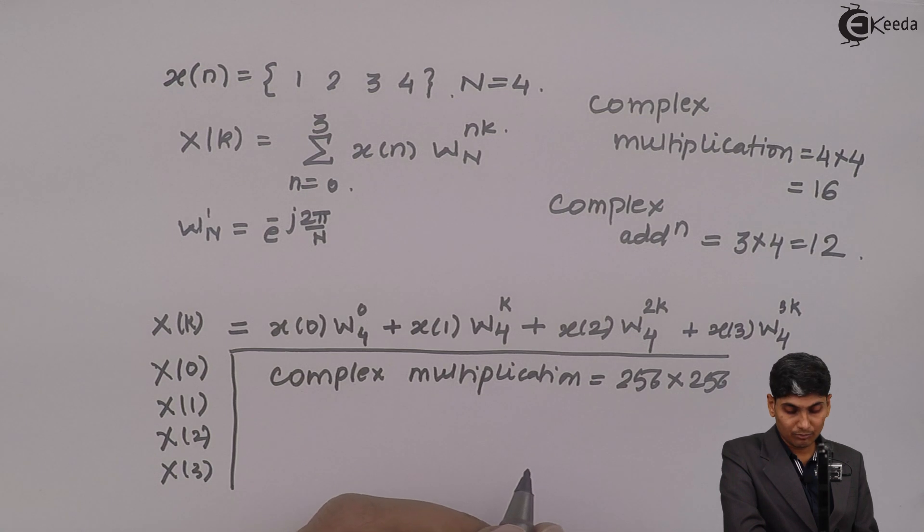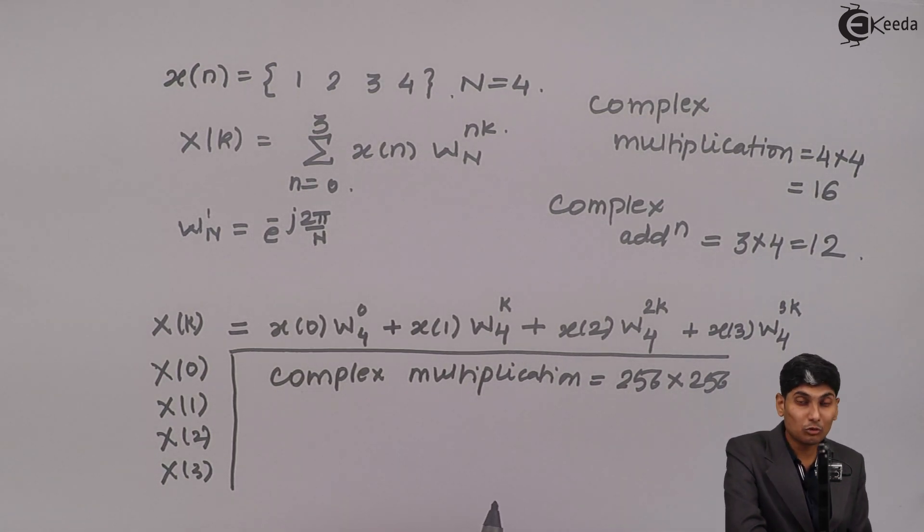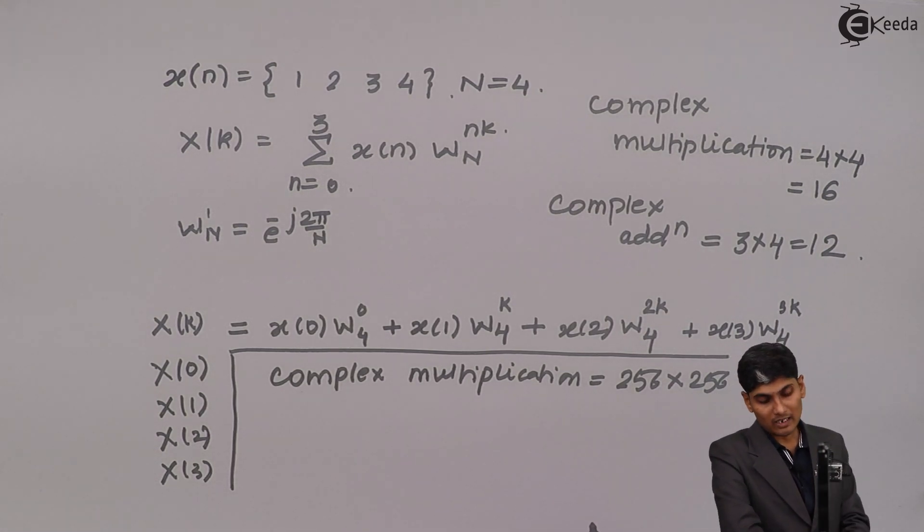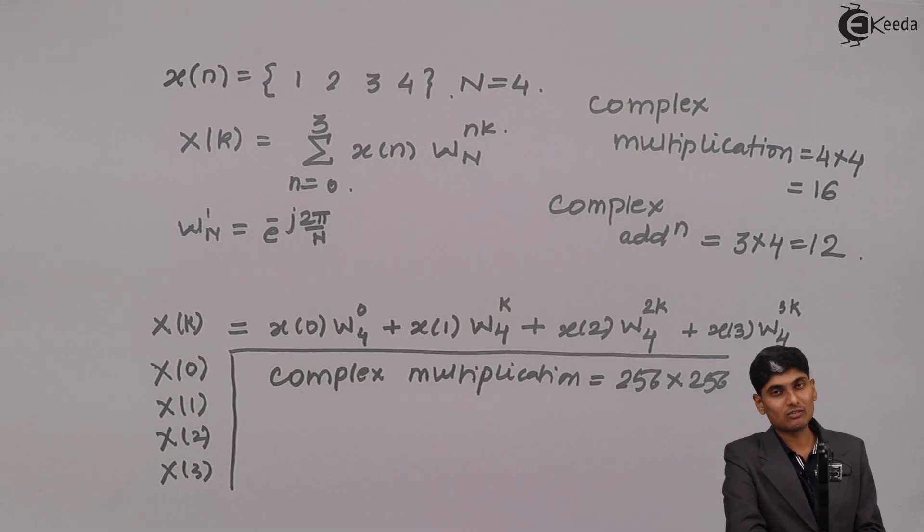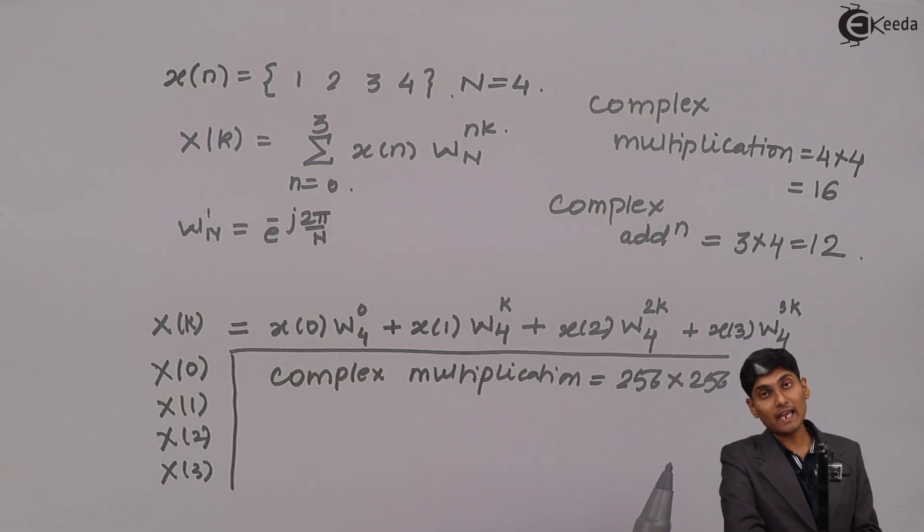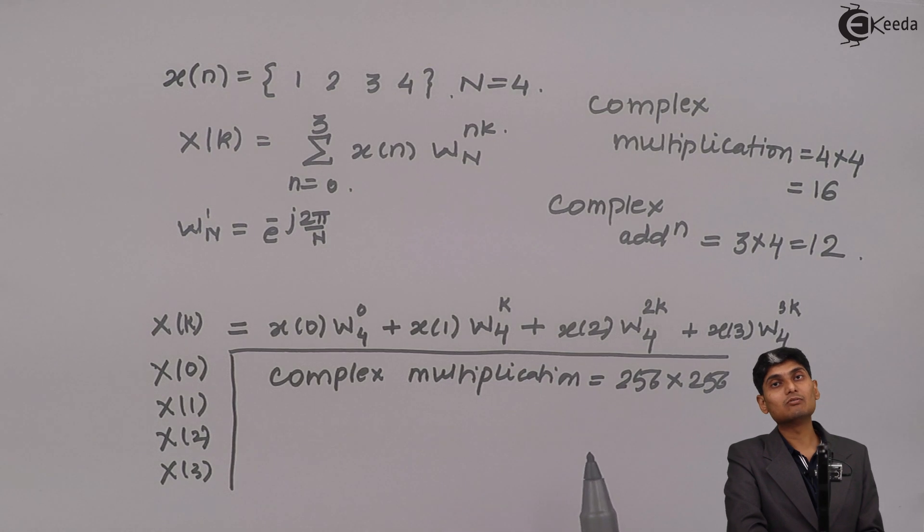So I am going to compute my DFT for 256 into 256 times and it is a complex numbered system. So it is again going to be very cumbersome. Now as the N will start increasing, the complex multiplication will become more and more complex and DFT will take a huge time to give us the result.